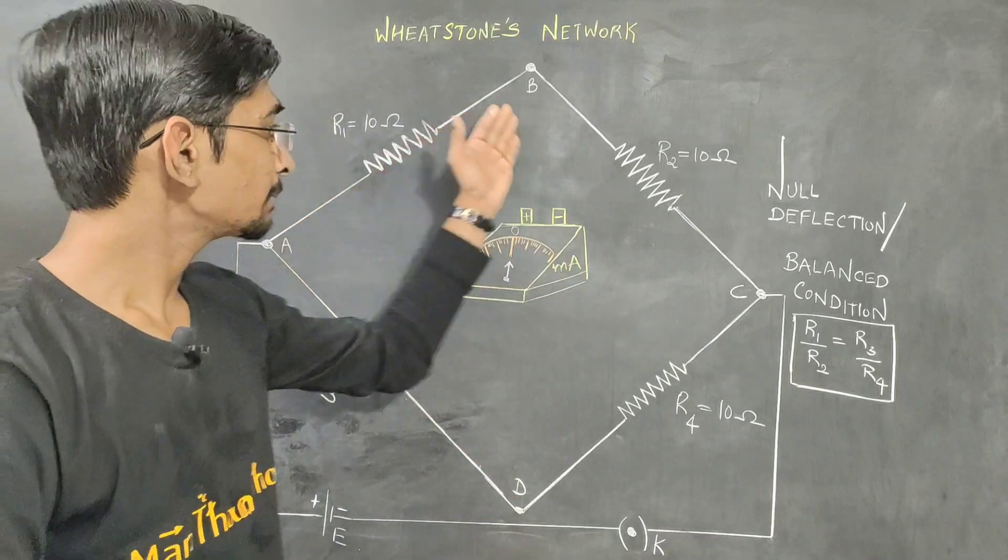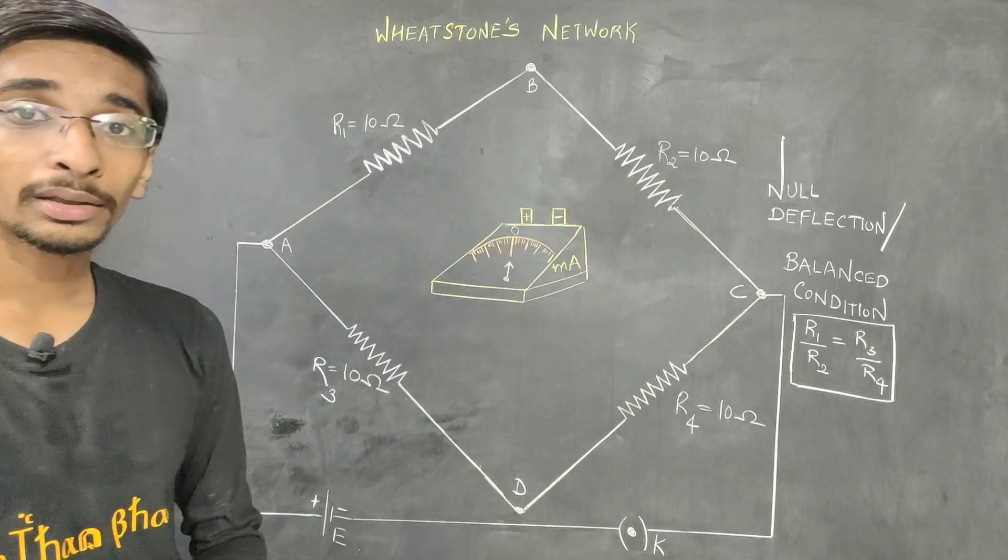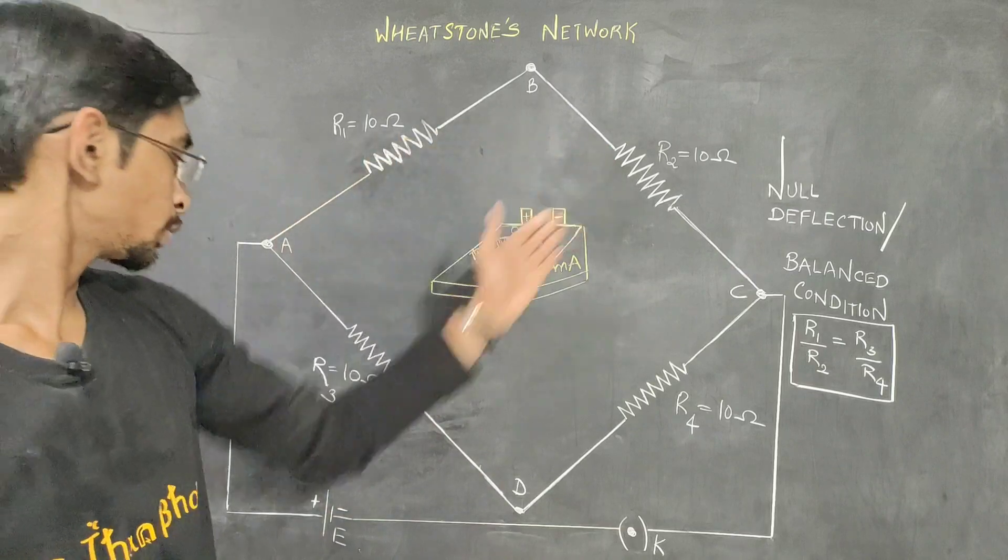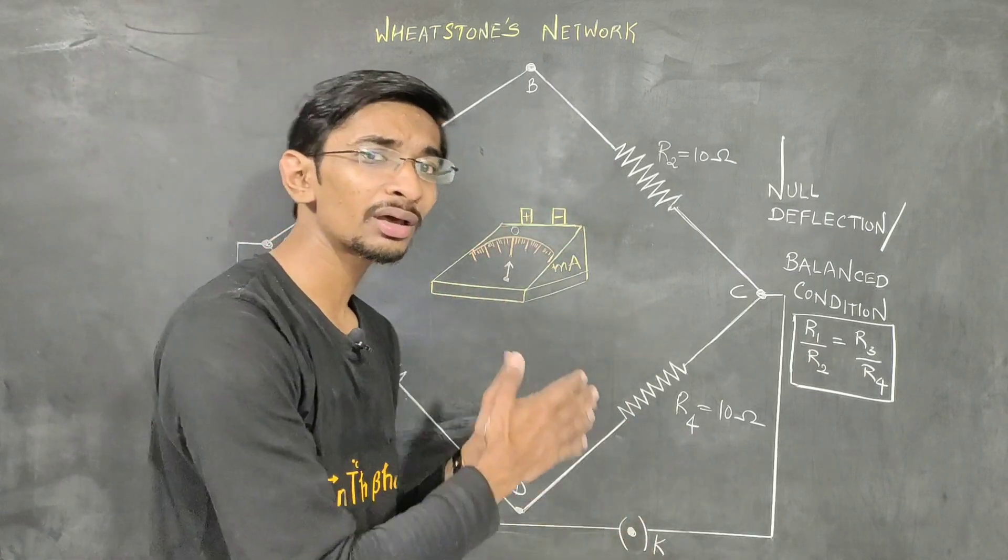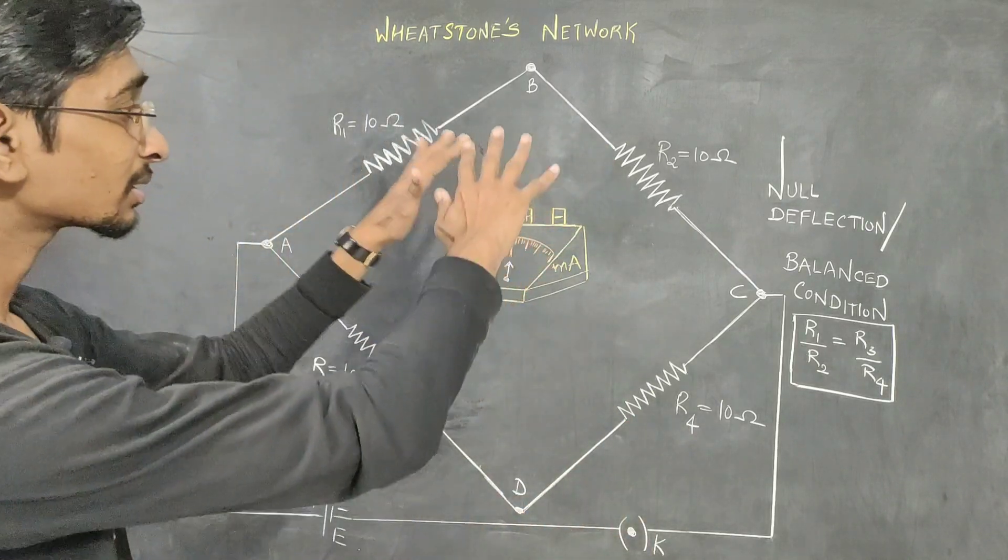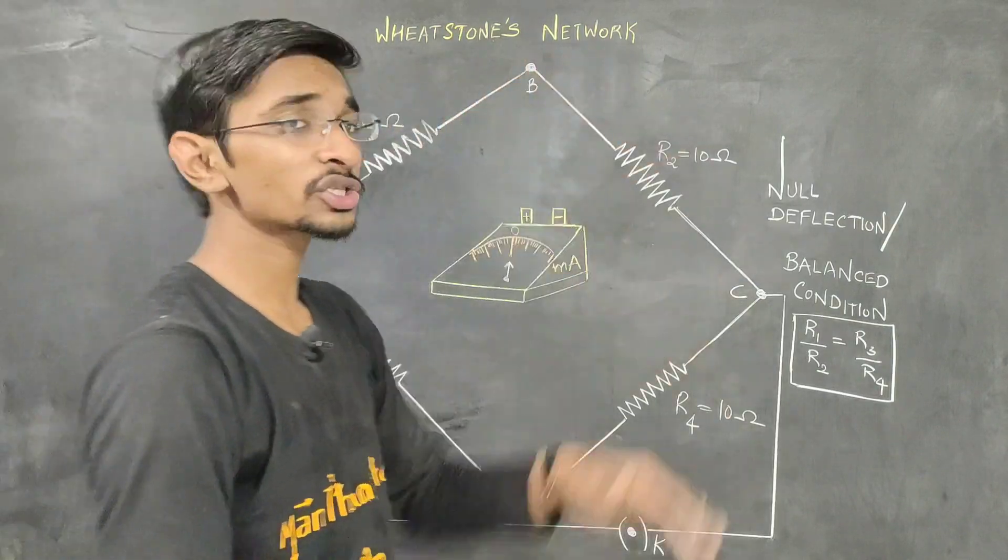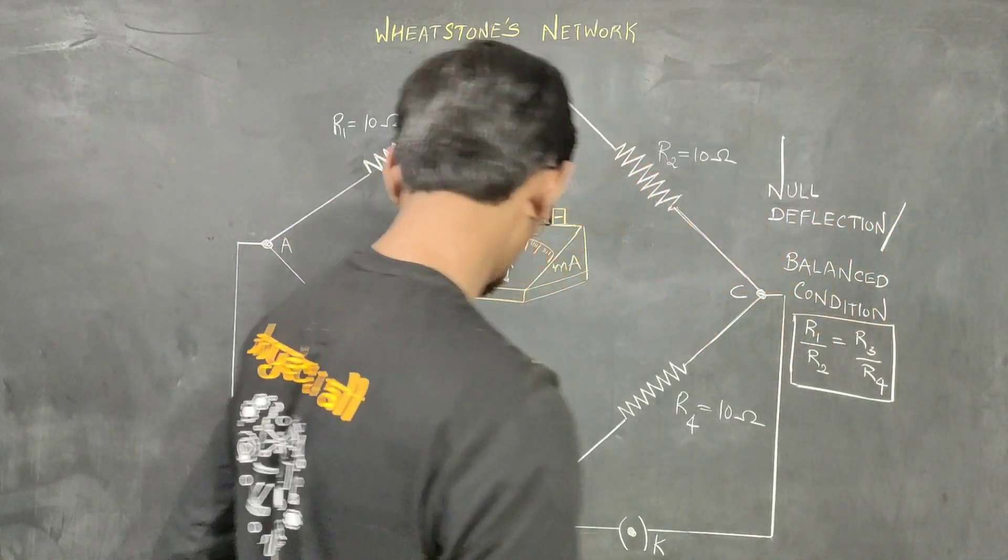Consider a quadrilateral A, B, C, D and four resistors R1, R2, R3, R4 are connected as shown. This arrangement is known as Whitestone network and this is connected with the battery.